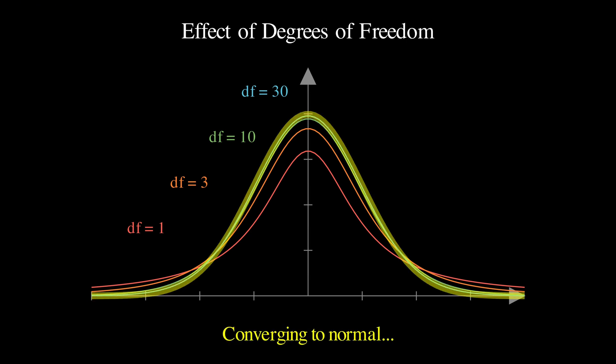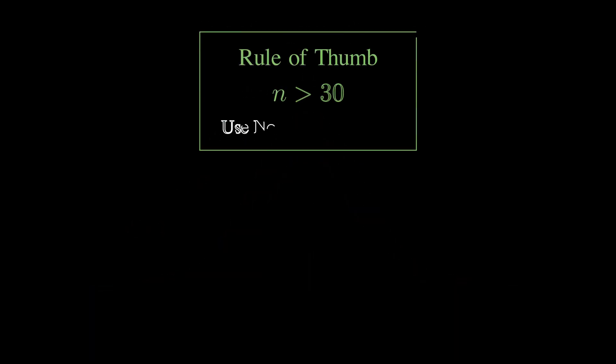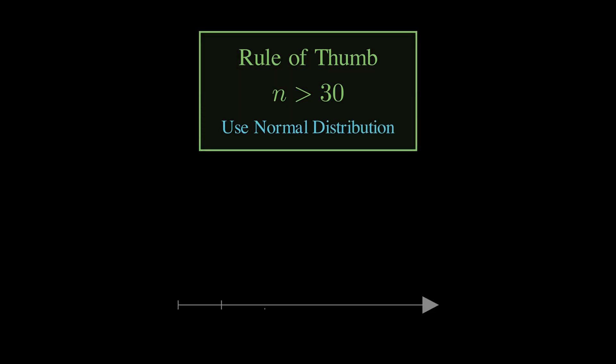The t-distribution starts looking more and more like the normal distribution. And this makes intuitive sense because with a larger sample, your estimate of the standard deviation becomes more accurate and that extra uncertainty we were worried about becomes less and less important. And by the time you get to about 30 degrees of freedom, the t-distribution is so close to the normal distribution, that for many practical purposes, you can just use the normal distribution. Which is why you'll often see this rule of thumb that says if n is greater than 30, just use the normal distribution.